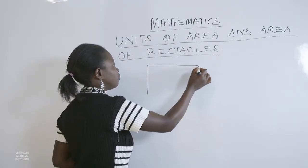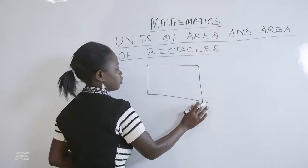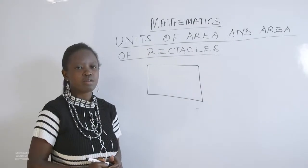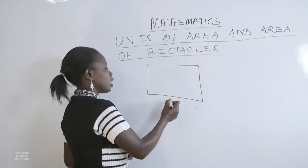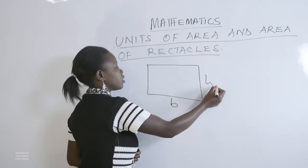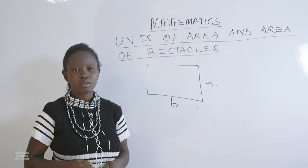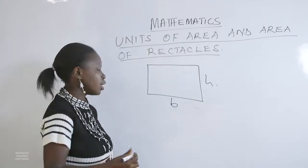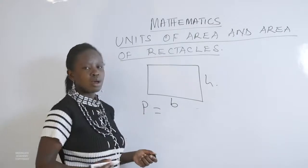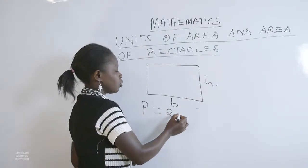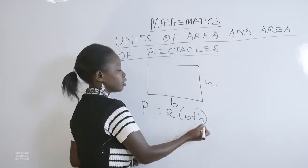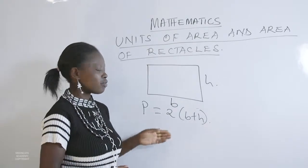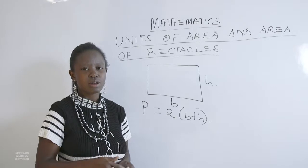For instance, we have a rectangle, and we need to get the perimeter of this given rectangle. We use the base and height, or the length and width of that given rectangle. The perimeter of this rectangle will be obtained by 2 times the quantity base plus height, or using length and width. So this is the perimeter of that given rectangle.